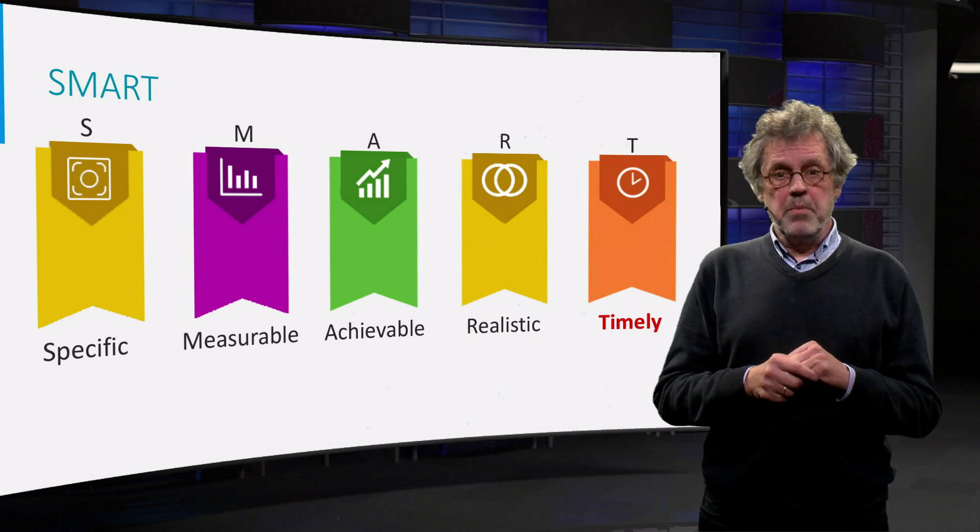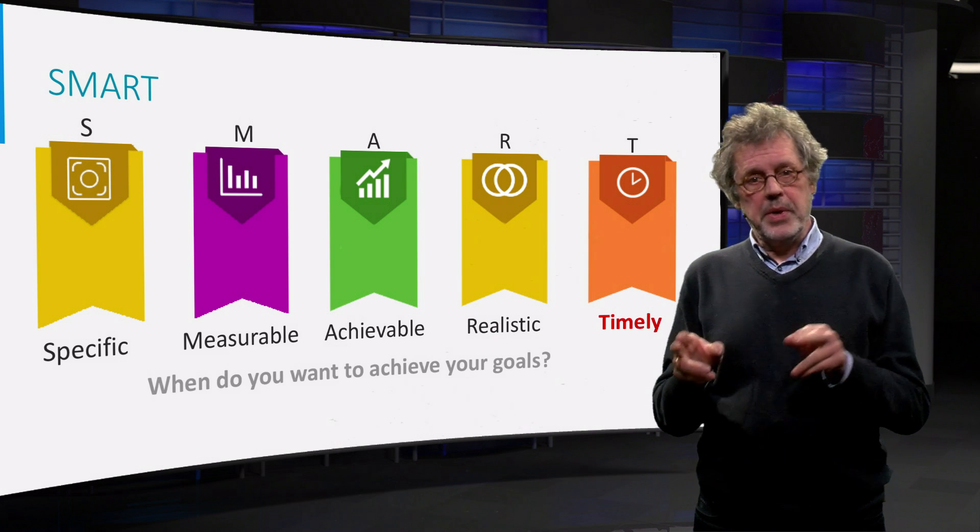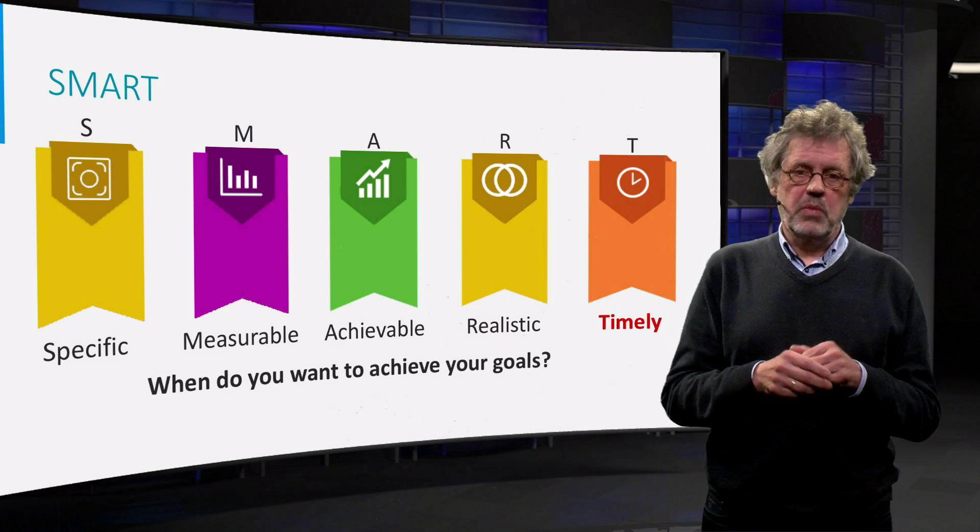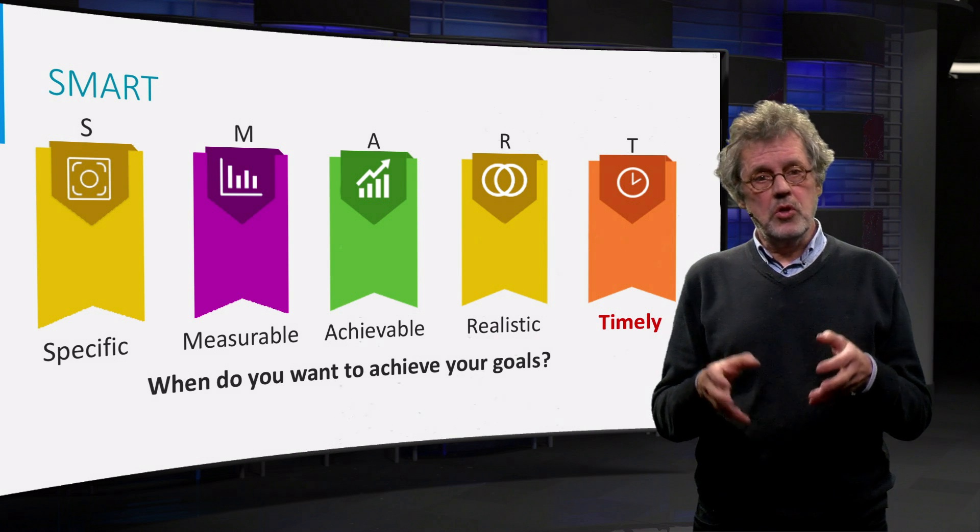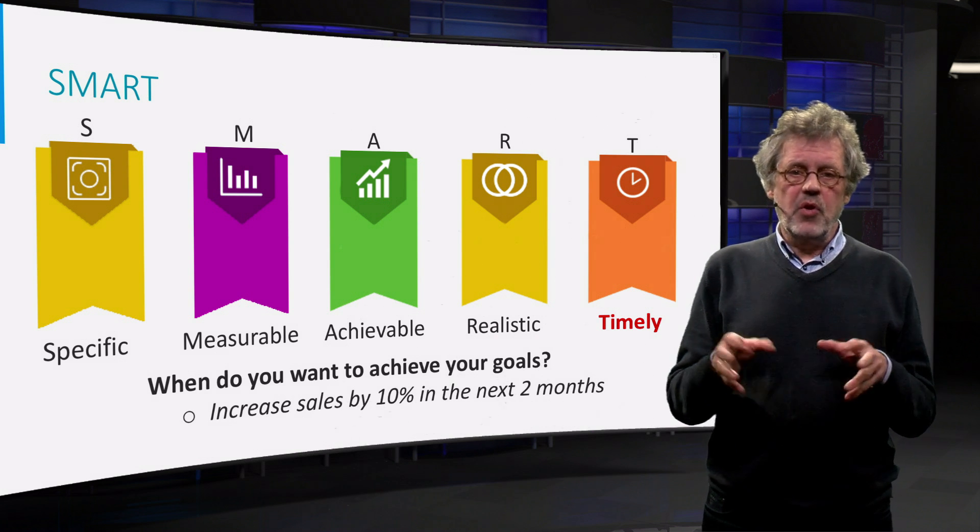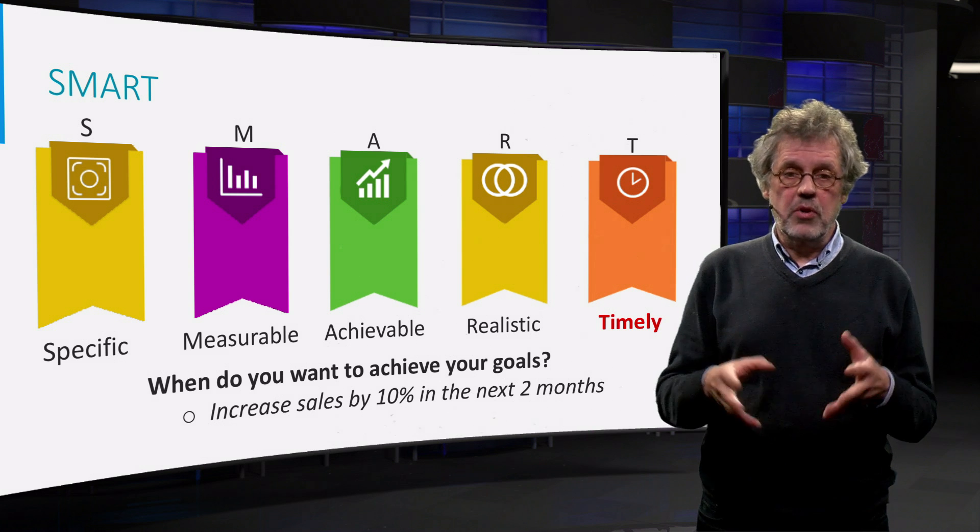The last criterion is time-bound. Make clear when or over which period you want to achieve your goals, next quarter, in a year or two years. A timeline indicates the urgency and it shows if you are on track.